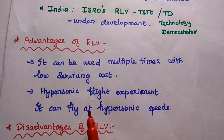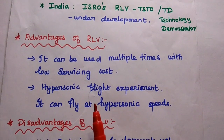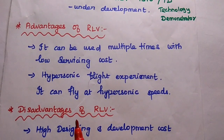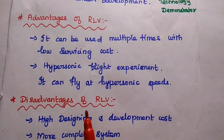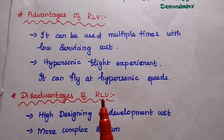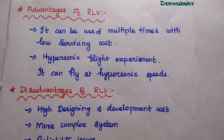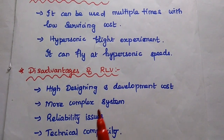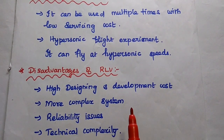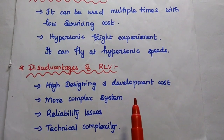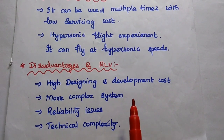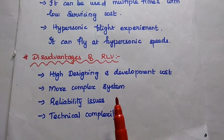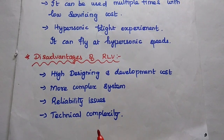The advantages of RLV are that it can be used multiple times with low servicing cost, and it can fly at hypersonic speed. Some disadvantages include high designing and development cost, more complex system due to the reusable concept, and it has to fly back to earth for reuse. There are also reliability issues and technical complexity.